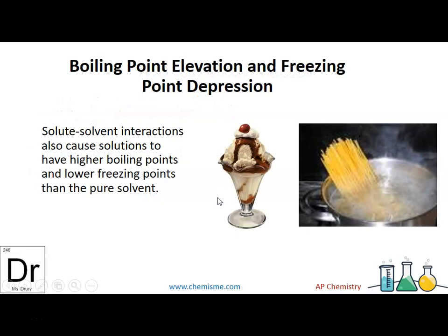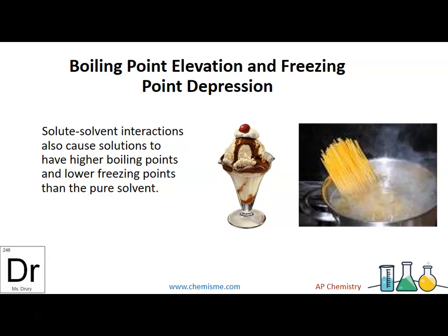Two more examples that really depend on the Van't Hoff factor are boiling point elevation and freezing point depression. The solute-solvent interactions cause solutions to have higher boiling points and lower freezing points than normal. For example, in ice cream, the milk resists freezing and may freeze at something lower than zero degrees — if your freezer isn't that cold, it won't freeze. For boiling point elevation, if you add enough salt, the water will not boil at 100°C but maybe at 110°C, and things like pasta will cook faster.